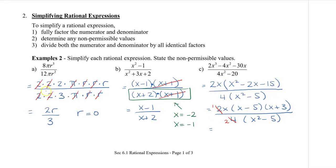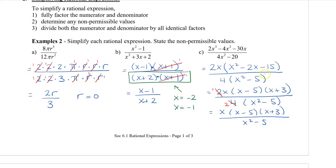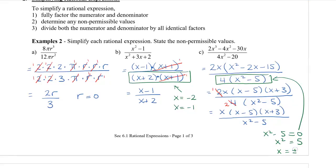When we cancel things off, they don't become 0 — they actually become 1. So all the canceled factors equal 1, though we don't write it down. For the non-permissible values in this last example, we look back at the denominator before simplifying. The expression with a variable was x² minus 5. Setting x² minus 5 equals 0 gives x² equals 5, so x equals plus or minus the square root of 5.